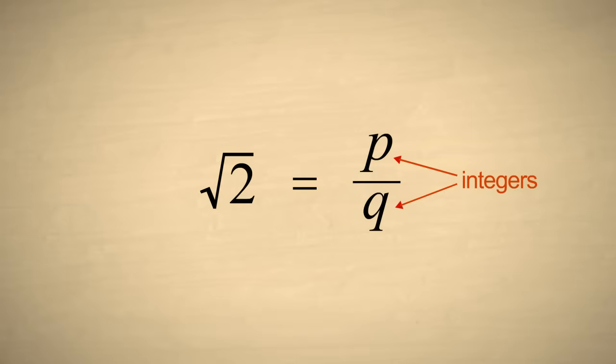p over q is obviously a fraction and, like any fraction, we can write it in its simplest form so that the integers p and q have no common factors. We also know that since the square root of two is not an integer, the denominator q is some number other than one.